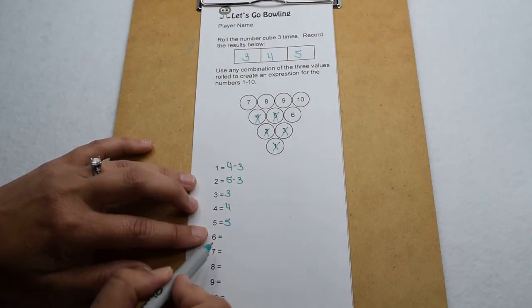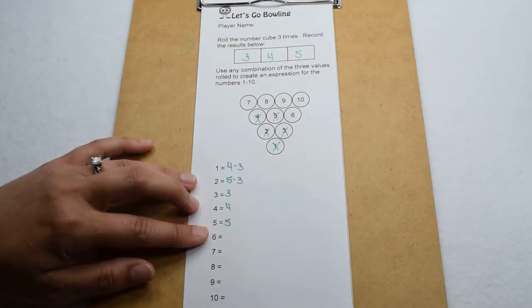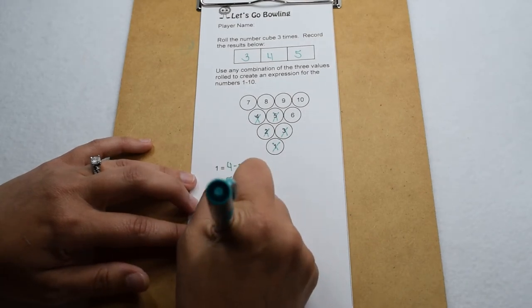Now skipping down to six, six gets a little trickier, because there really isn't a combination we could add, subtract, multiply, or divide. So we're going to use factorials.